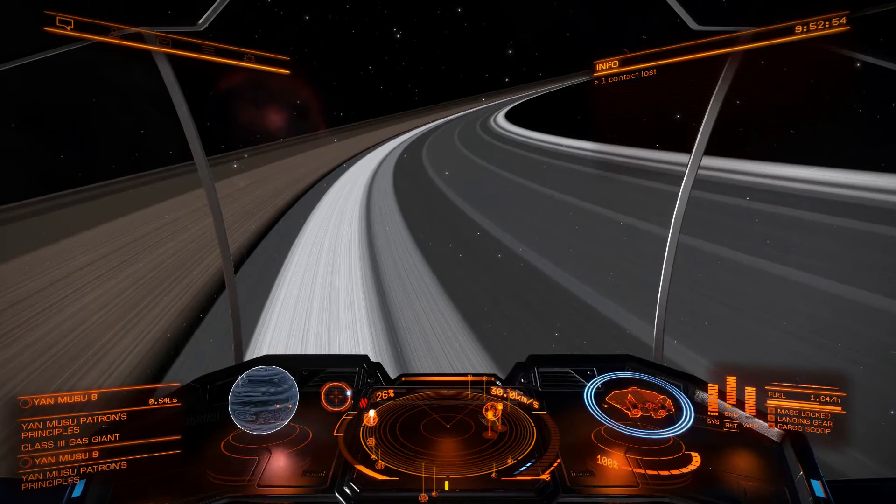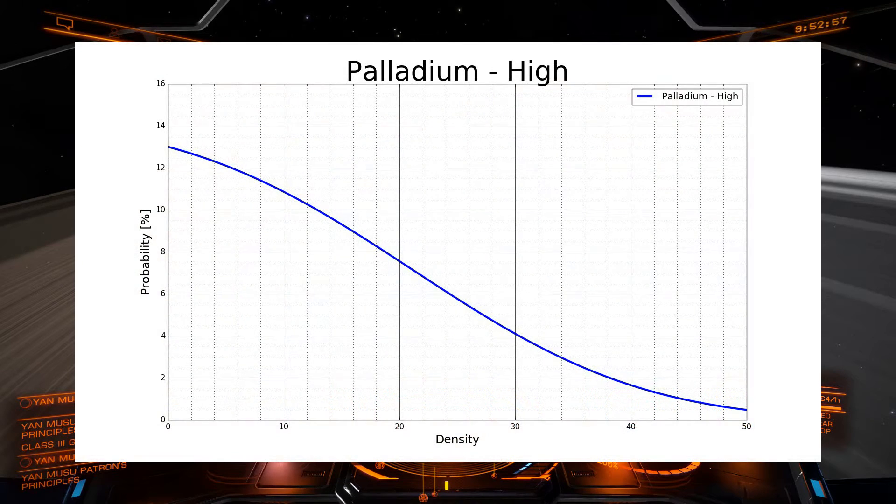And I'll put up one of the graphs here. And as you can see, this is for palladium in a high density area. And what we're looking at here, at the horizontal x-axis, we have the density of the rock. So when you scan the rock with a prospector, if it says 20% palladium, then it would be 20% on the x-axis. The vertical y-axis, which says probability, that is how likely it is to find that specific density if you scan a random rock.